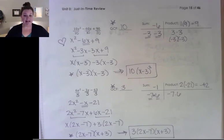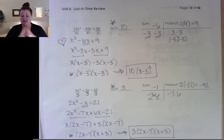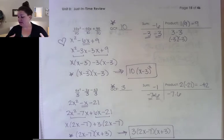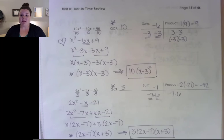That is the end of J15 — the AC method / sum-product way of factoring polynomials. You should now be able to complete that assignment. If you have any questions, please let me know.